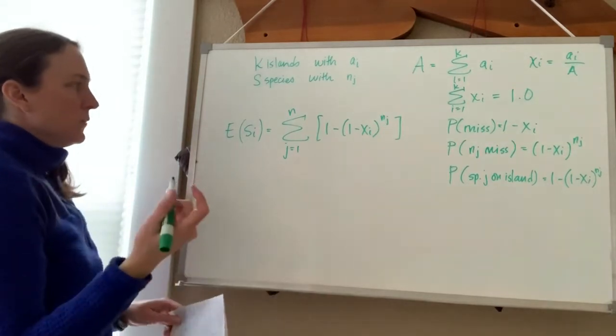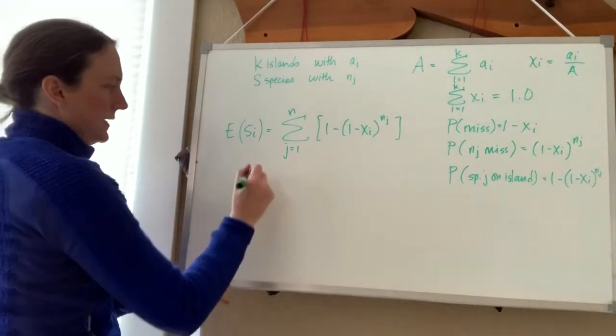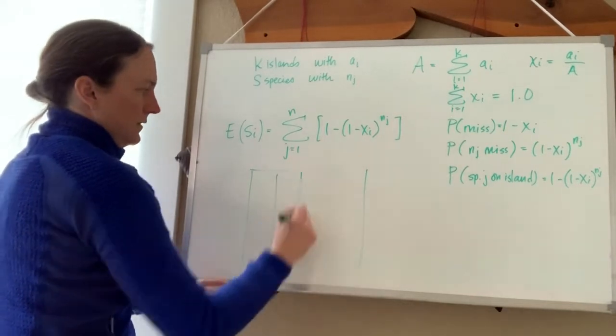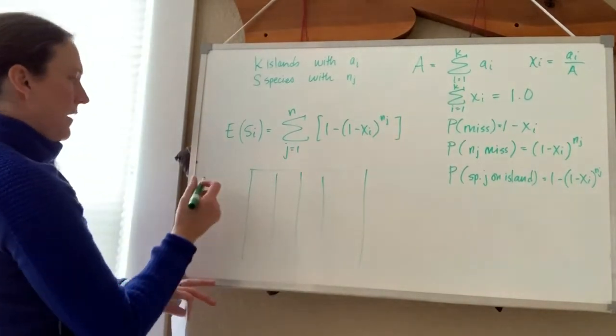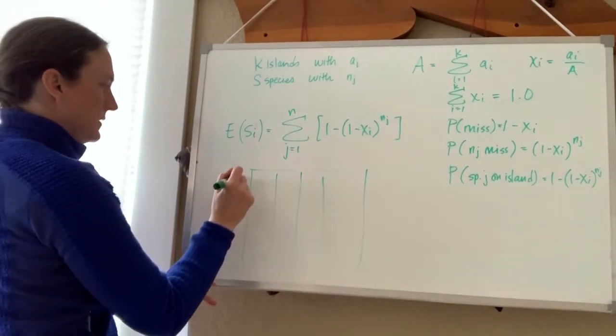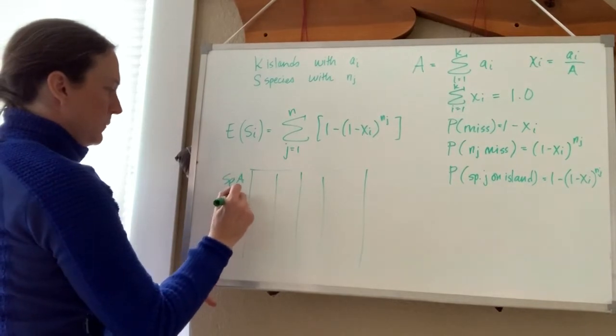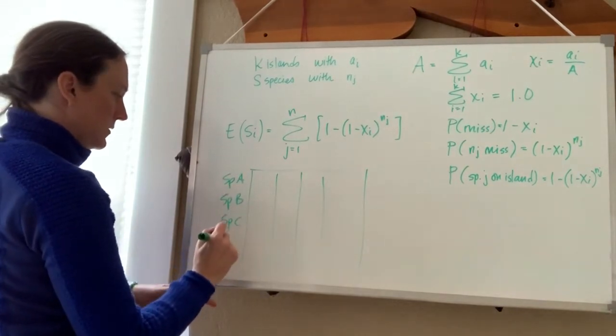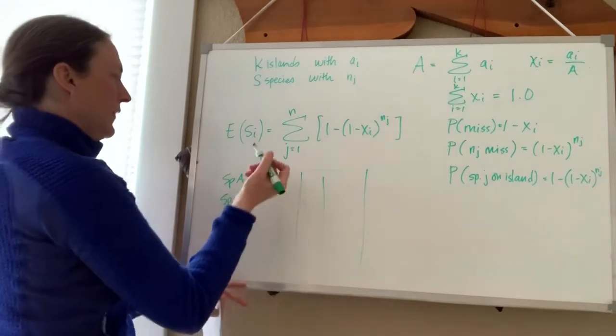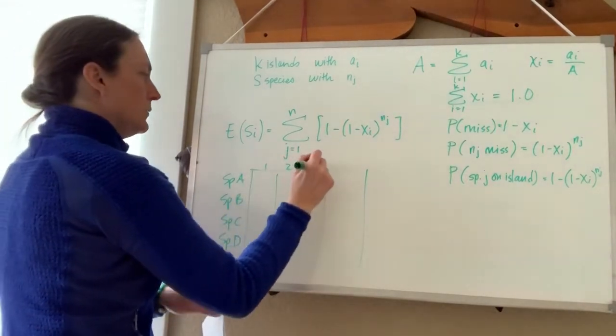So if you were to get a data set that looked like this: you have species A, B, C, D, and then you have islands 1, 2, 3, 4.